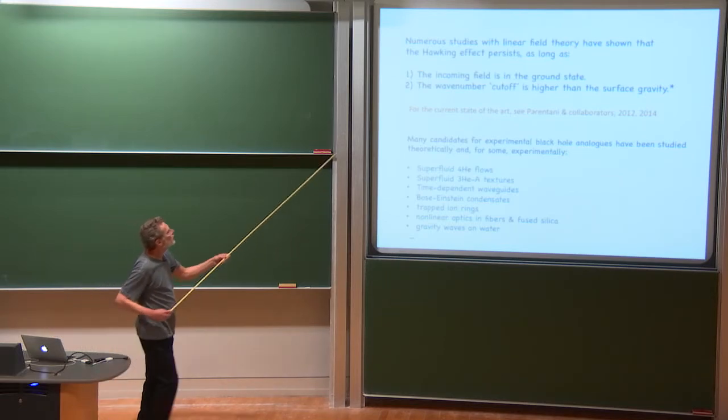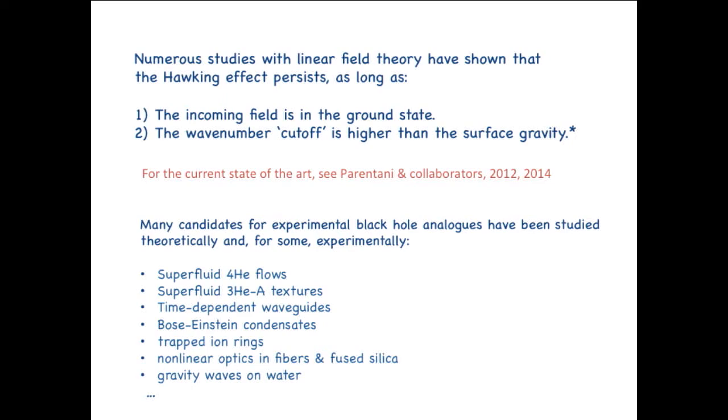Okay, so numerous studies with linear field theory and different dispersion relations have shown that the Hawking effect is robust to this sort of a modification of the short-wavelength behavior, provided, A, the incoming field is in its ground state, sort of in the flowing fluid. The perturbations start out in their ground state. And that the cutoff wave number, the scale at which the dispersion starts to be nonlinear, should be much higher than the surface gravity of the black hole.